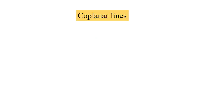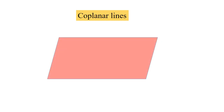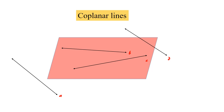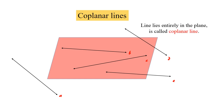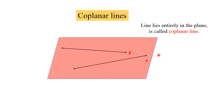Coplanar lines: if we have a plane with some lines on it — line A, line B, line C, line D, and line E — coplanar lines means the lines which lie entirely in the plane. Lines B and C are lying entirely in the plane, but lines A, E, and D are not lying entirely in the plane, so we cannot call them coplanar. Therefore, only line B and line C are coplanar.